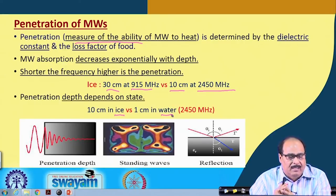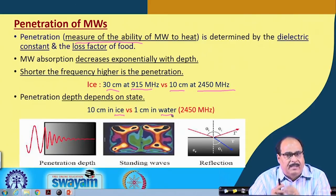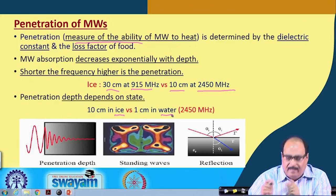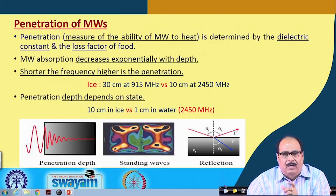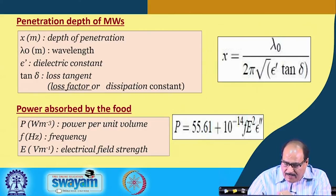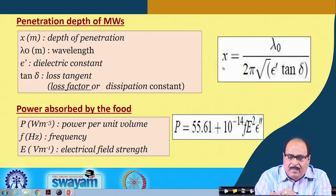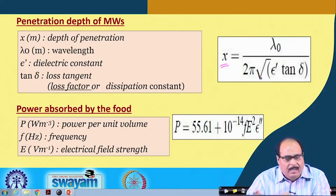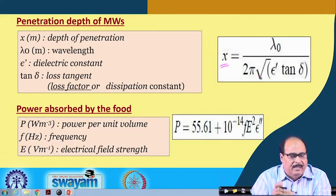The factors influencing penetration depth are: frequency, state of matter, and the material itself — and accordingly the amount of heat they can generate. The penetration depth x in meters can be measured by the formula: x = λ₀ / (2π × √(ε' × tan δ)), where λ₀ is the wavelength, ε' is the dielectric constant, and tan δ is the loss tangent.